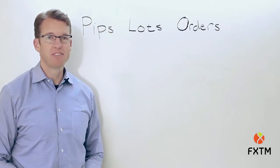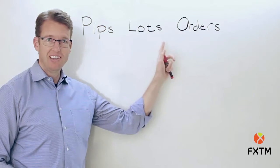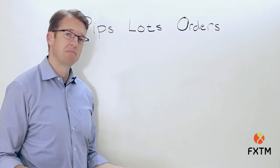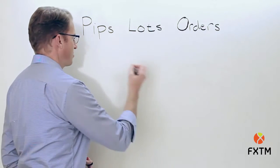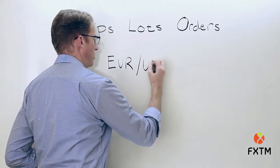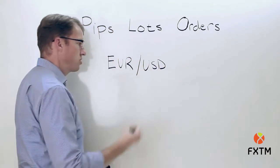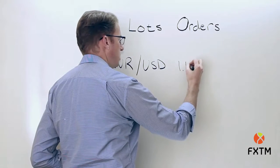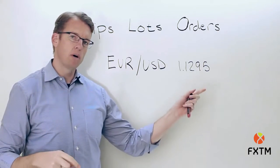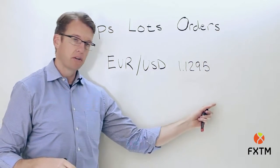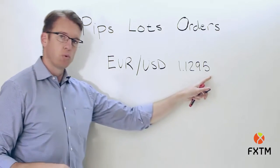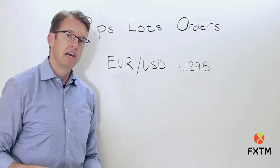In this portion of the FXDM educational video series we're going to be taking a look at pips, lots, and orders. Let's start with pips. Pip actually stands for 'price improvement point,' but everybody's just going to call it a pip. Let's start with a quick example: if we are trading the EUR/USD exchange rate and its current quote is 1.1295, that fourth decimal place — if it goes up or down by one increment to a 6 or a 4 — then it's had a change of one pip.